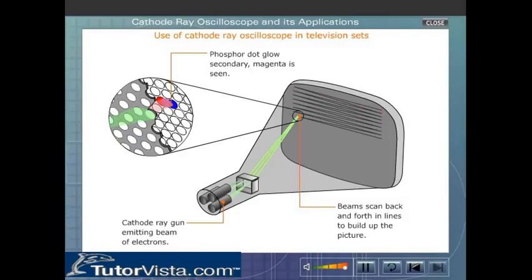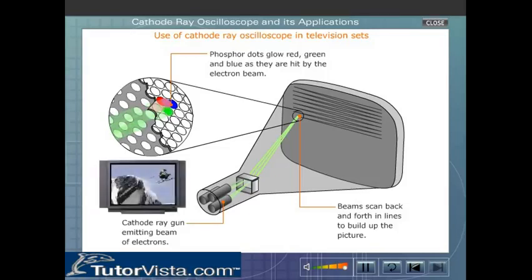Thus, a combination of three primary colors in proper proportion can produce a colored picture on the screen. When viewed from the front of the TV, the spot moves in a pattern similar to the way your eyes move when reading text, but the scanning takes place at such a rapid rate that your eye sees a constant image over the entire screen.